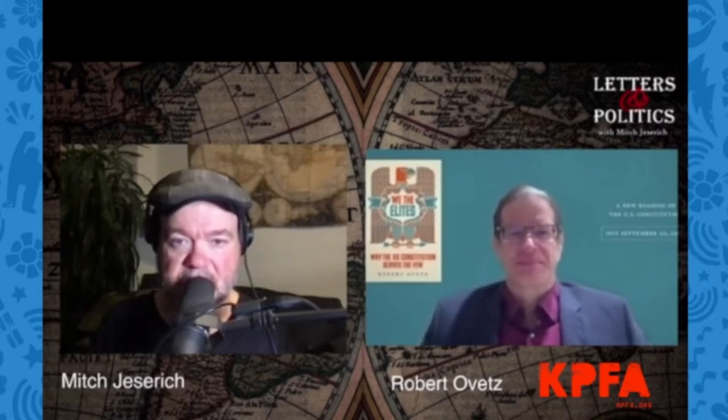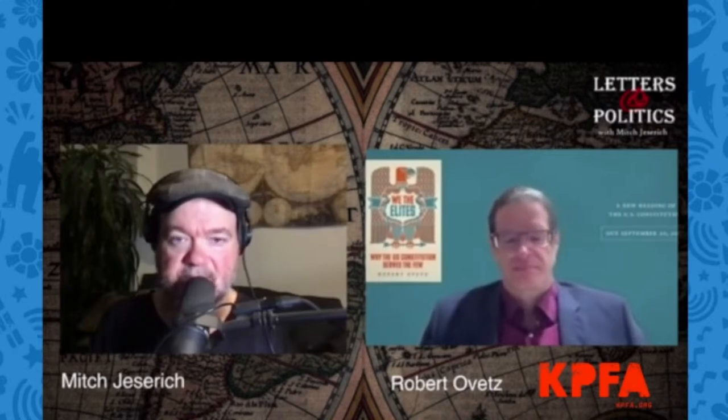Today we're going to be in conversation about the making of the U.S. Constitution back in 1787 at the Constitutional Convention in Philadelphia. My guest today argues that this document, which is largely revered in public discourse today, is a document that was made by the elites, meant to serve the elites, and it's a document that has served the elites in this country ever since.